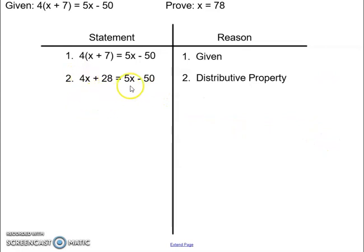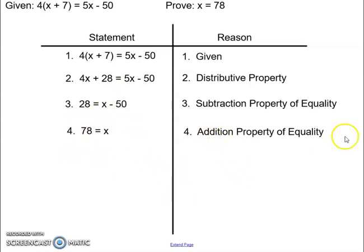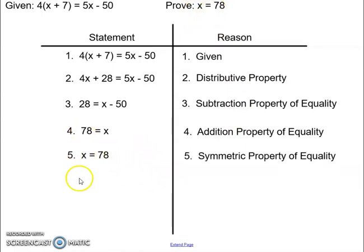Now I'm going to subtract 4x from both sides, moving the smaller x from the left side over to the right side. That is the subtraction property of equality — I can subtract anything I want from both sides of the equation. You don't necessarily need to know these names, but that's the reason why this works. x still isn't by itself, so I'm going to add 50 to both sides and get 78 equals x. Lastly, I wanted to say x equals 78 but I have 78 equals x, so I flip that around — that's the symmetric property of equality. What's important is this is what a two-column proof looks like: you say something and you tell me why you said it.